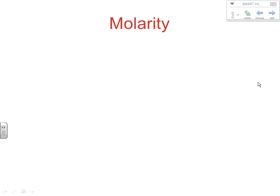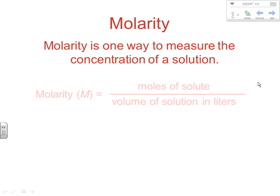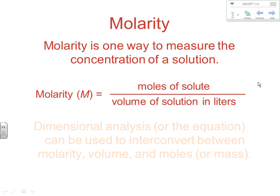The first and most common in chemistry is molarity — it should be the one you're most familiar with from last year. Molarity is a way to measure the concentration of a solution, and if at all possible, this is what we typically use in chemistry. The symbol for molarity is a capital italics M, and it stands for the moles of solute divided by the volume of the solution in liters. So molarity equals moles per liter; big M is interchangeable with moles per liter.